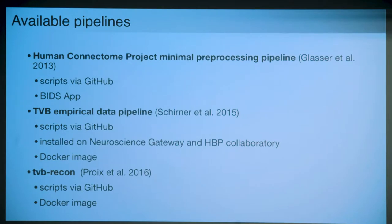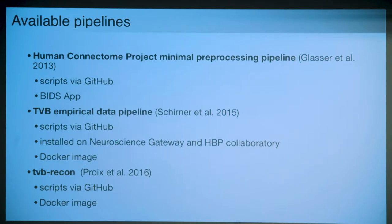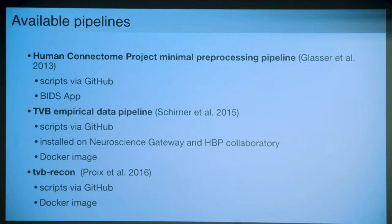The HCP has very high quality data acquired in their scanners and very good pipelines adjusted specifically to that high quality data. Sometimes it's hard to adjust an existing pipeline to the data you actually have. Two other pipelines are the one from Schörner and our lab - the TVB empirical data pipeline - and another from our colleagues in Marseille, Timothée Proix. Both construct brain network models and give output in TVB format, ready to use in simulations. These scripts are available via GitHub, and there's also a Docker image you can pull and execute on your own computer or supercomputer. The TVB empirical data pipeline is also installed on the Neuroscience Gateway and the Human Brain Project Collaboratory.